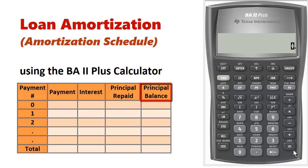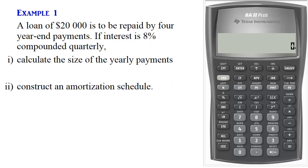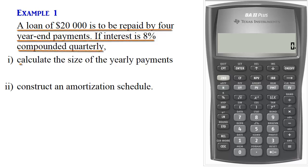Let us look at an example. A loan of $20,000 is to be repaid by four year-end payments. If interest is 8% compounded quarterly, calculate the size of the yearly payments and construct an amortization schedule.